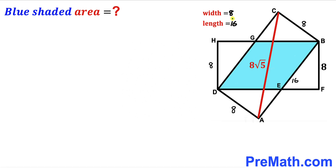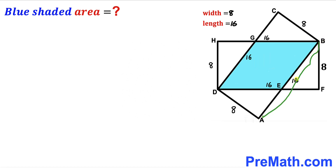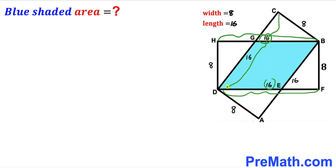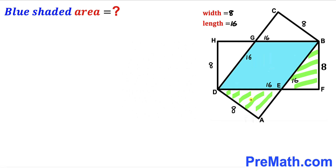We have now figured out both the length and the width of these rectangles. Since the length of this rectangle is 16 units, all corresponding lengths across both rectangles are 16 units.